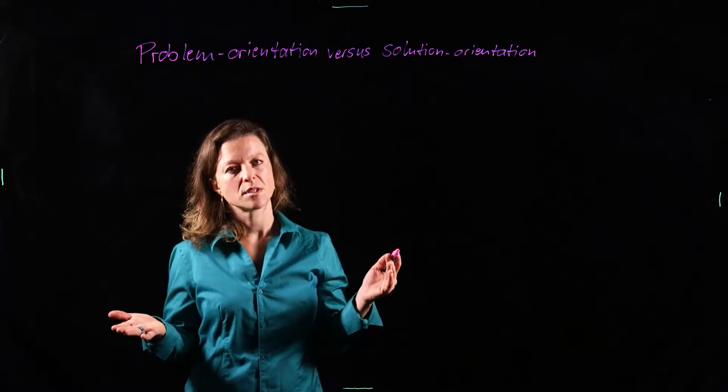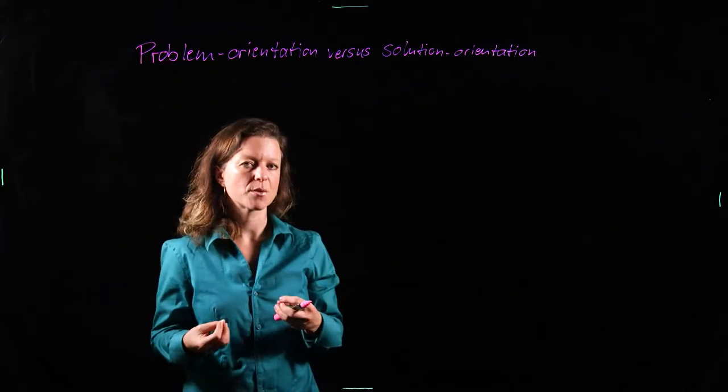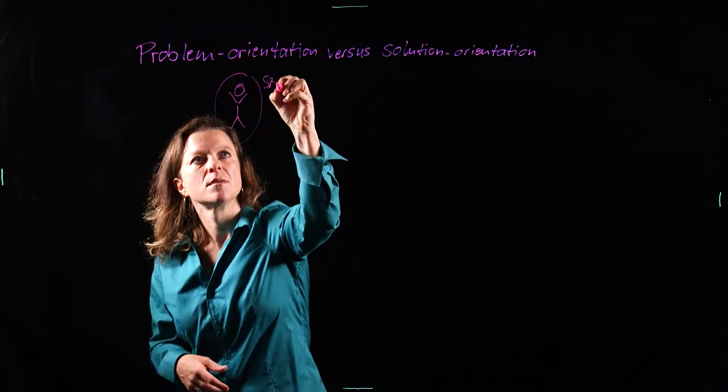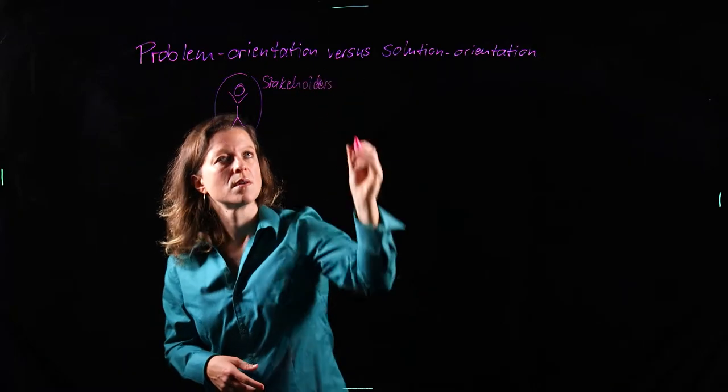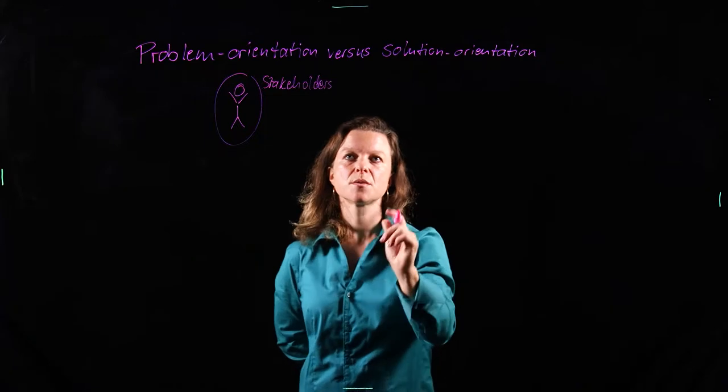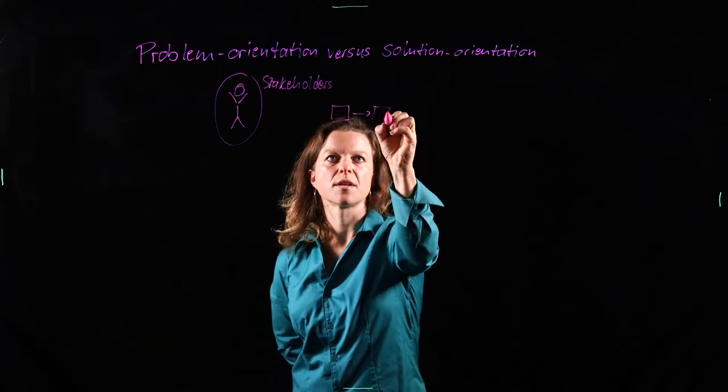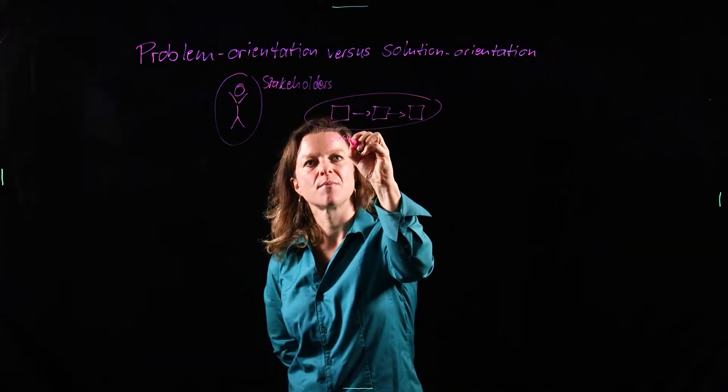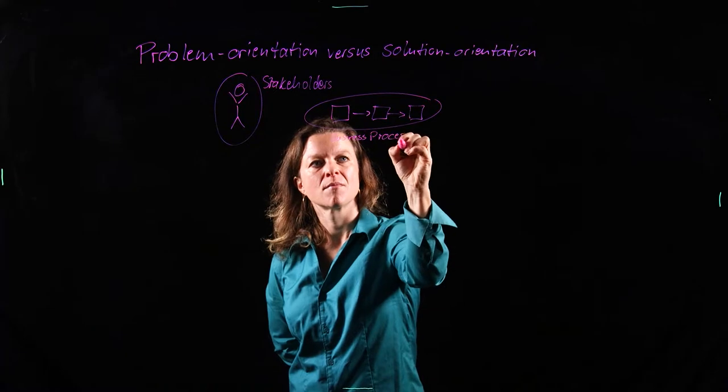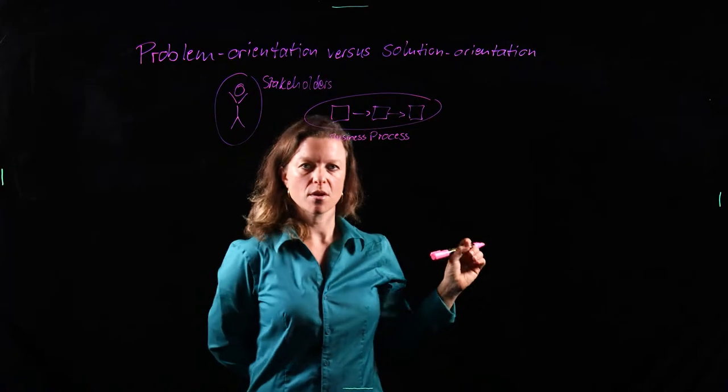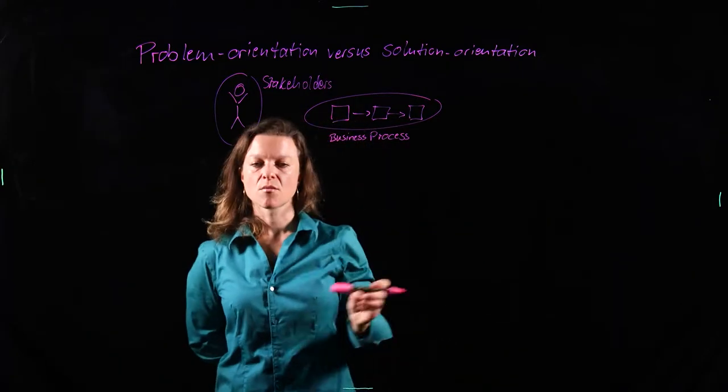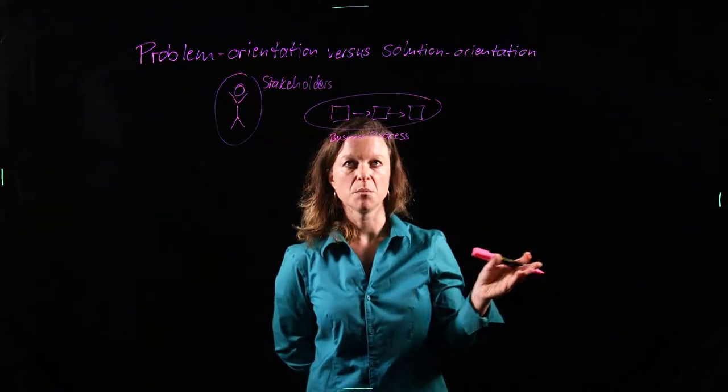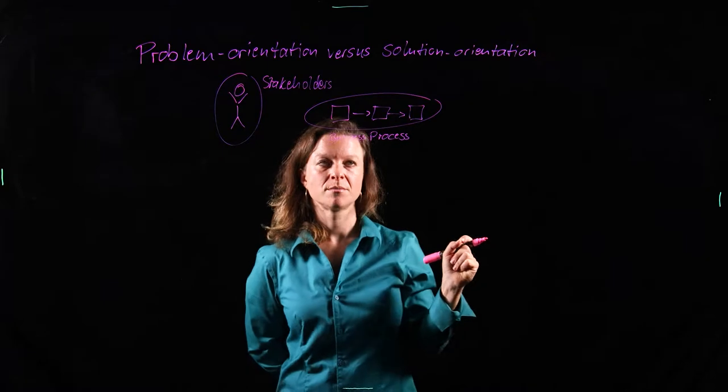So when we develop a software system, we start on a very high level. We try to figure out who are the people that we even need to talk to. That's what we call the stakeholders. Then these stakeholders will have some kind of process that they're looking at, that they want to improve. It's a business process. That business process can be something like ordering a book online or it can be getting into a carpool system and ordering a carpool, or I want that little robot that goes clean my house for me. Whatever it is.